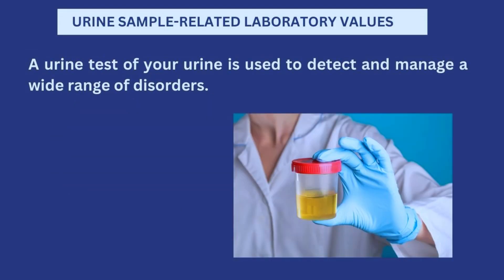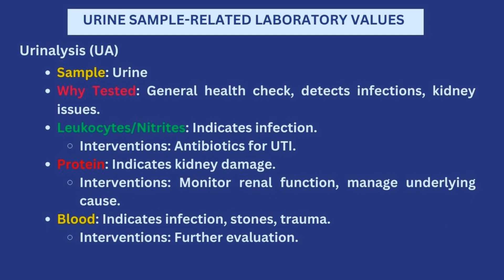Another common sample taken in the hospital are urine samples. Urine tests can be used for different reasons — to detect a wide range of disorders, manage conditions, know if a person is responding to treatment, and even detect pregnancies. For a basic urinalysis, many things can be checked. It is done to get a general health check and detect infections as well as kidney issues. If leukocytes or nitrites are found in the urine, that indicates an infection.